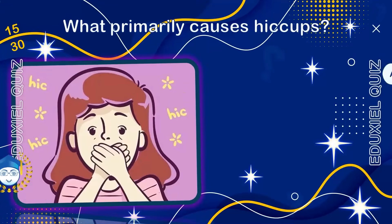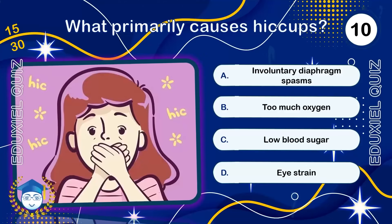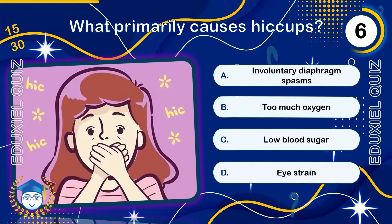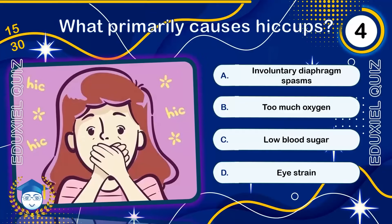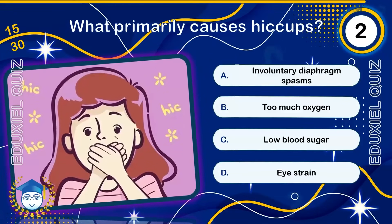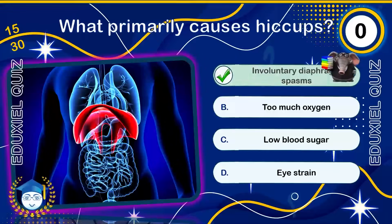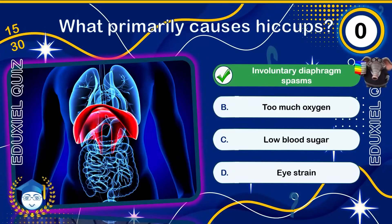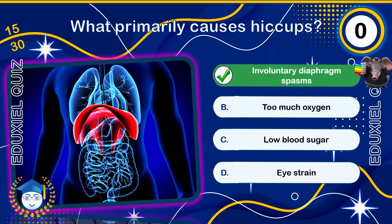What primarily causes hiccups? Hiccups are caused by involuntary spasms of the diaphragm, followed by sudden closure of the vocal cords. While they usually last only a few minutes, the longest recorded case persisted for 68 years. They may be triggered by overeating, stress, or carbonated drinks.